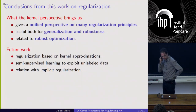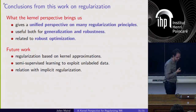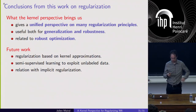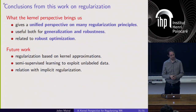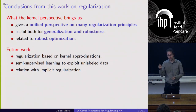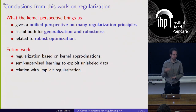To conclude: we give a unified perspective on many regularization principles — both existing ones and new penalties related to these principles. We show that regularization is useful both for generalization and robustness, and part of it is related to robust optimization. For future work, we are trying to develop other regularization strategies based on kernel approximations. Since these penalties don't depend on labels, they may be useful for semi-supervised learning. From a theoretical perspective, we'd also like to understand better the effect of optimization and stochastic gradient descent on generalization, and links with the kernels we develop here.